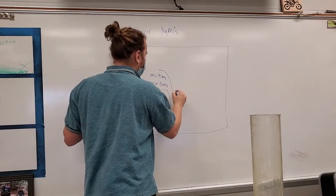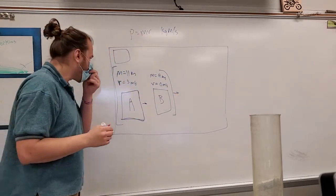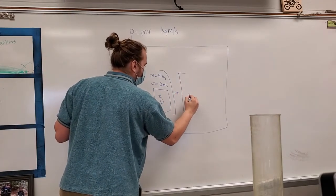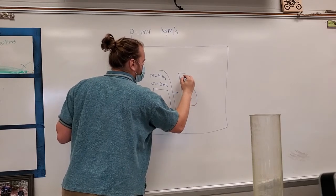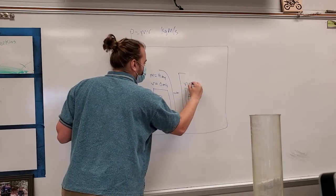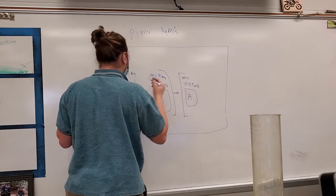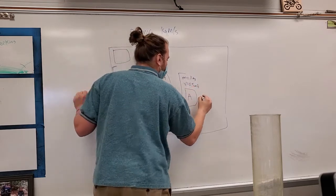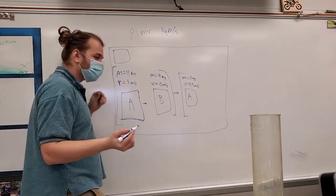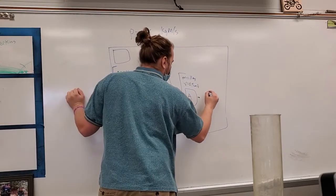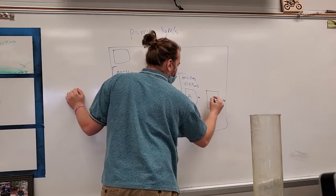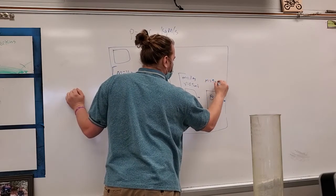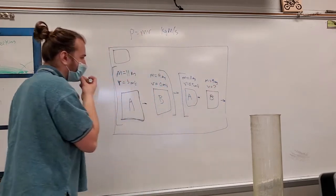Now, we'll say they hit each other, and now mass A is going 0.5 meters per second. Still has the same mass as before, 11 kilograms. What is the velocity of mass B? So mass A is going this way. Mass B is going that way a little bit faster. What is the velocity of mass B?